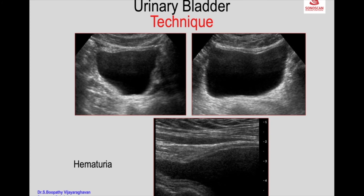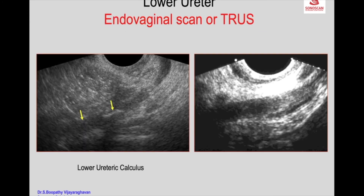This is a patient presenting with hematuria. You see the sagittal scan and transverse scan. Another example shows a slightly dilated distal most ureter where the obstruction is due to a soft tissue mass. In a diabetic patient, it is a sloughed papilla causing obstruction in the lower ureter.